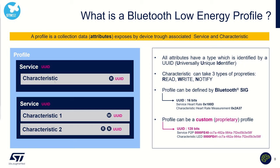Each service or characteristic is defined by a unique ID, which has two formats. Either it is a 16-bit unique ID — in this case we are talking about a standard unique ID, standard profile, standard service defined by the Bluetooth SIG Alliance. Or it can be a proprietary profile, in which case unique IDs are 128 bits. This is the case of our peer-to-peer server, which we will work on today.